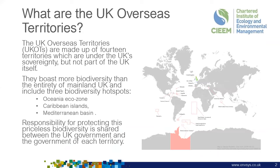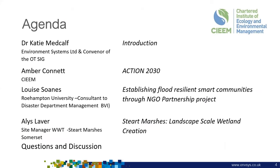For those not familiar with the Overseas Territories, the UK Overseas Territories are made up of 14 territories which are under UK sovereignty but not part of the UK itself. They're important because they boast more biodiversity than the entirety of mainland UK and include three biodiversity hotspots: the Oceania ecozone, the Caribbean islands, and the Mediterranean basin. Responsibility for protecting this priceless biodiversity is shared between the UK government and each territory's government.